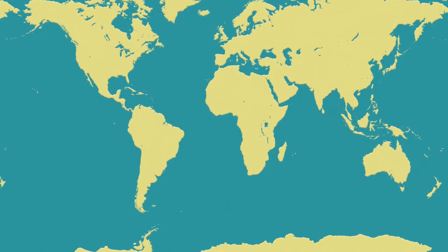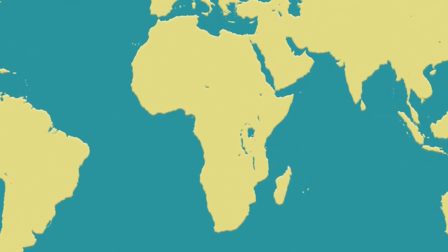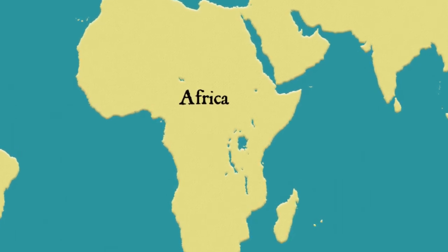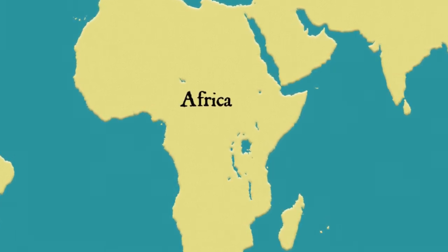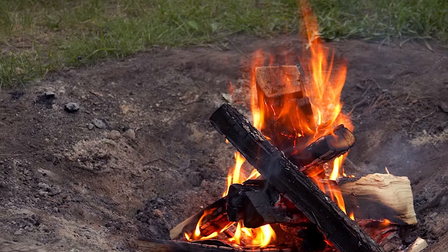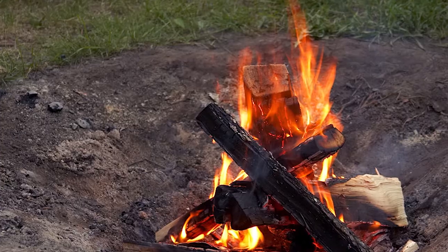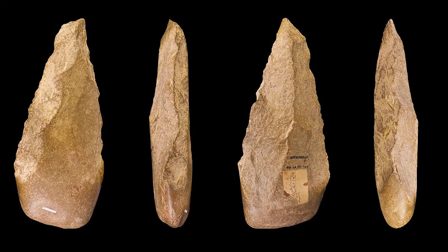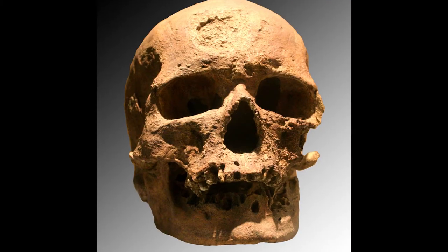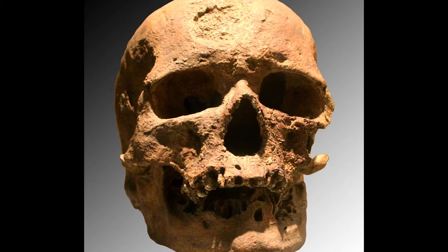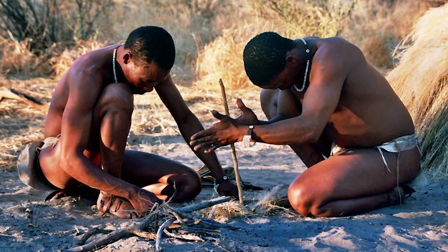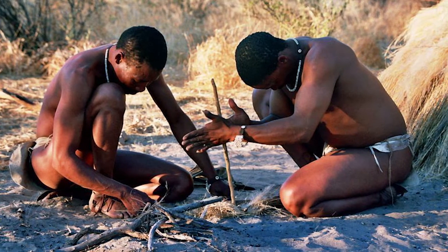We as a species — and I mean every human being on the planet — trace our origins to one place: Africa. It was in Africa that we first evolved into human beings. It was in Africa that we first mastered the use of fire and tools. Sometime around a hundred and fifty thousand years ago, we had become biologically modern humans. For all intents and purposes, we were us — modern humans.